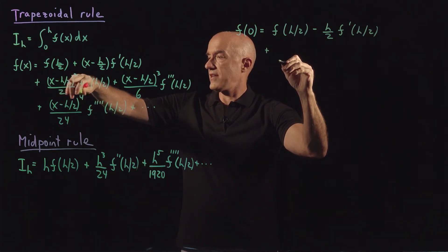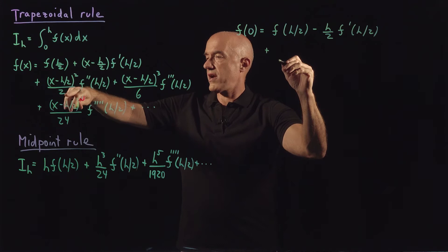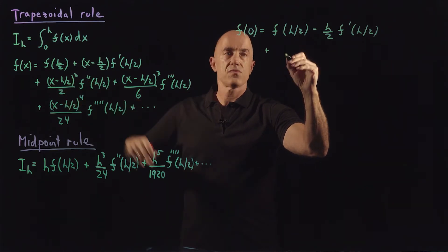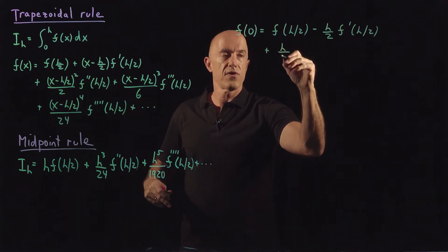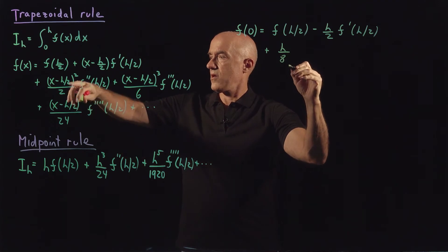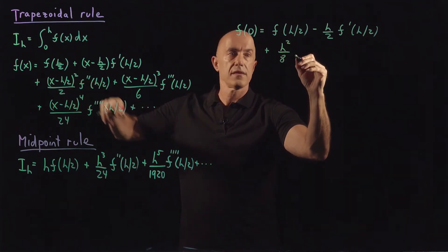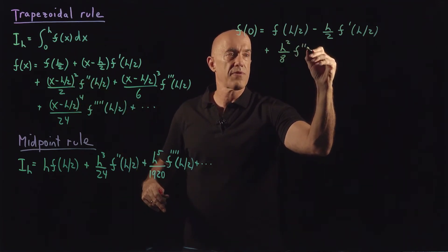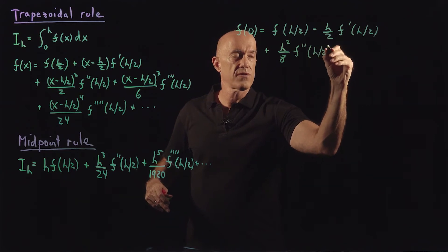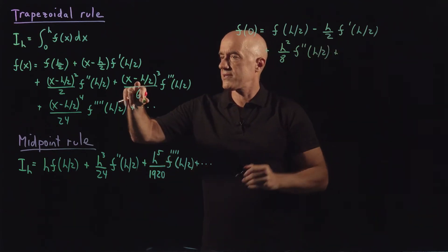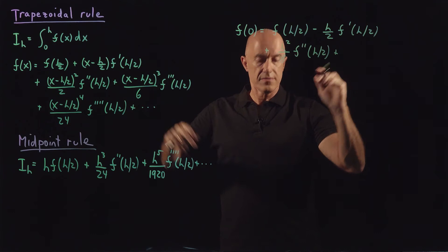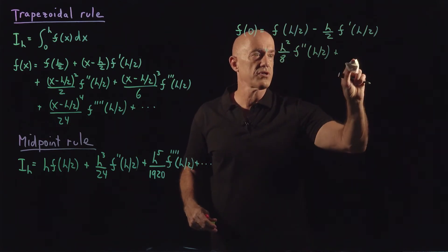plus (h/2) squared over 2, which is h squared over 8, times f double prime of h over 2, plus or minus. Sorry, this is alternating signs, so the next one is a minus.